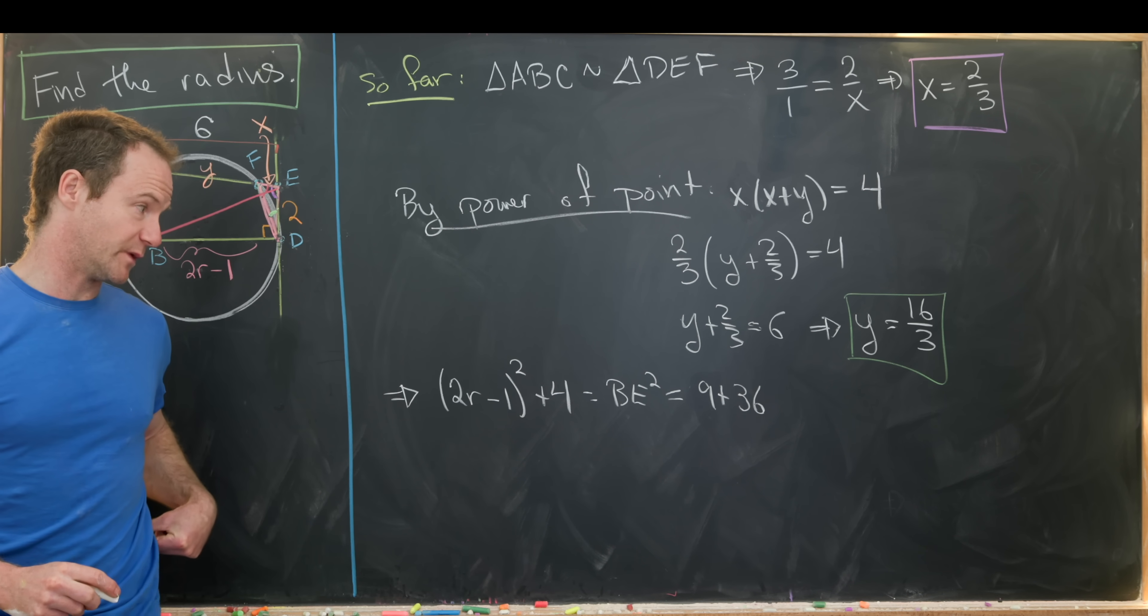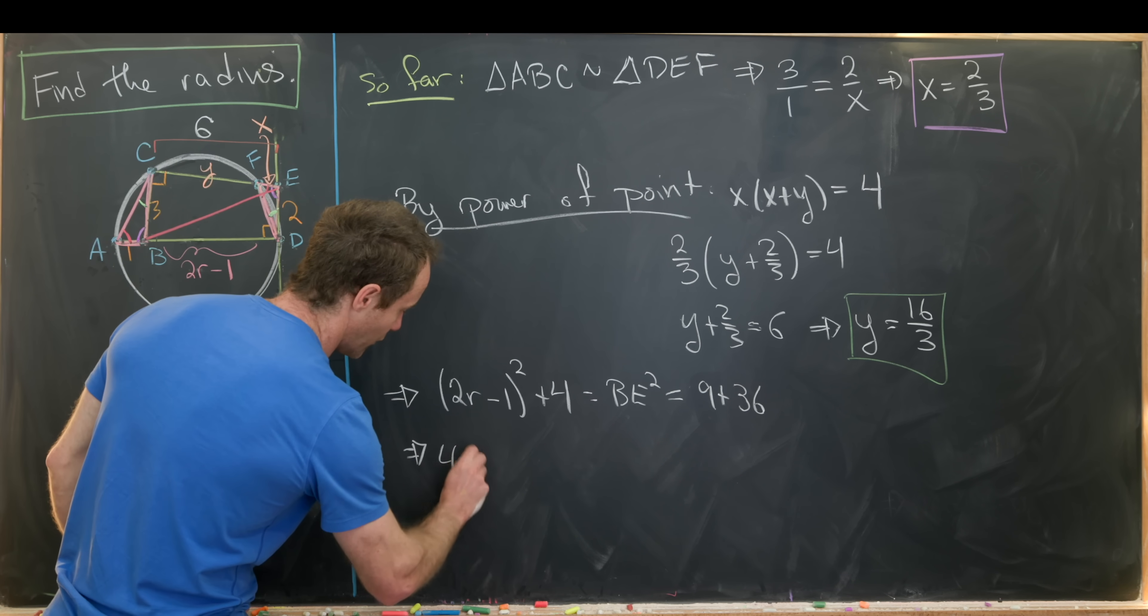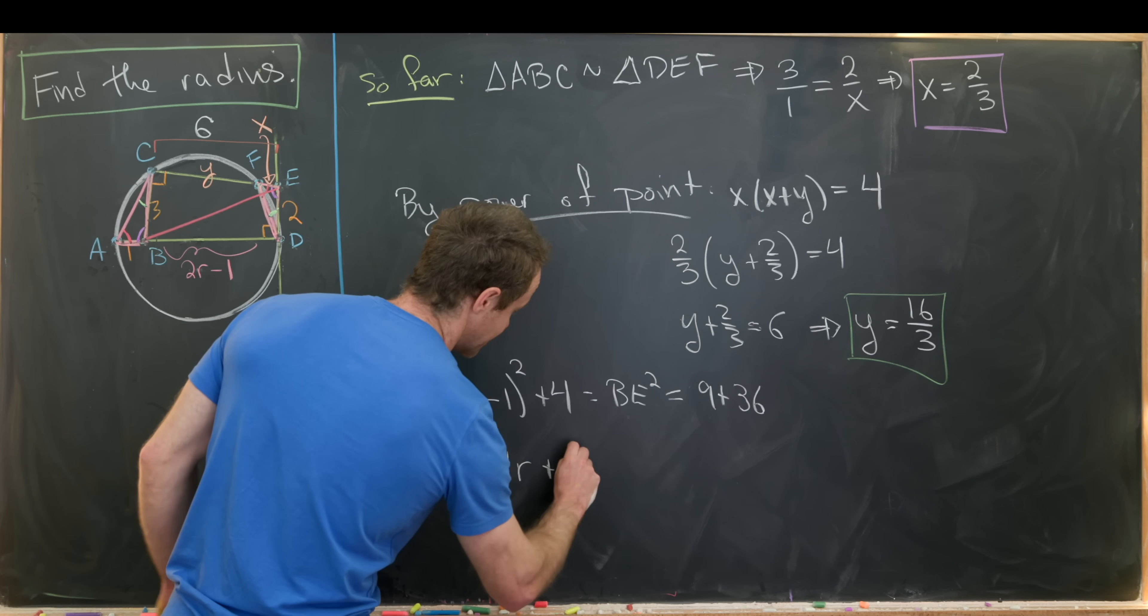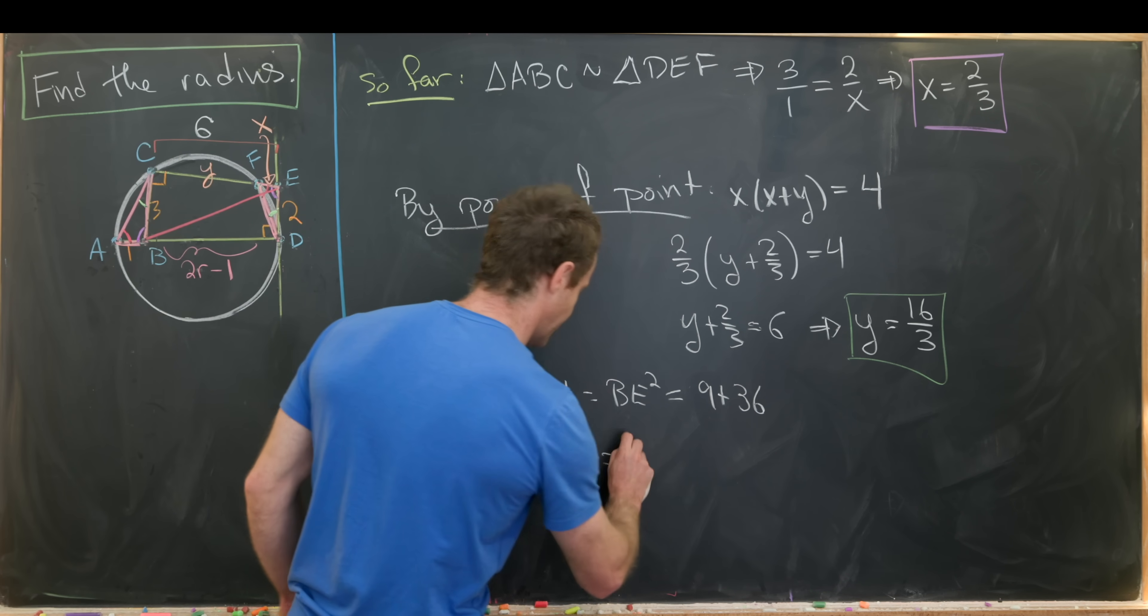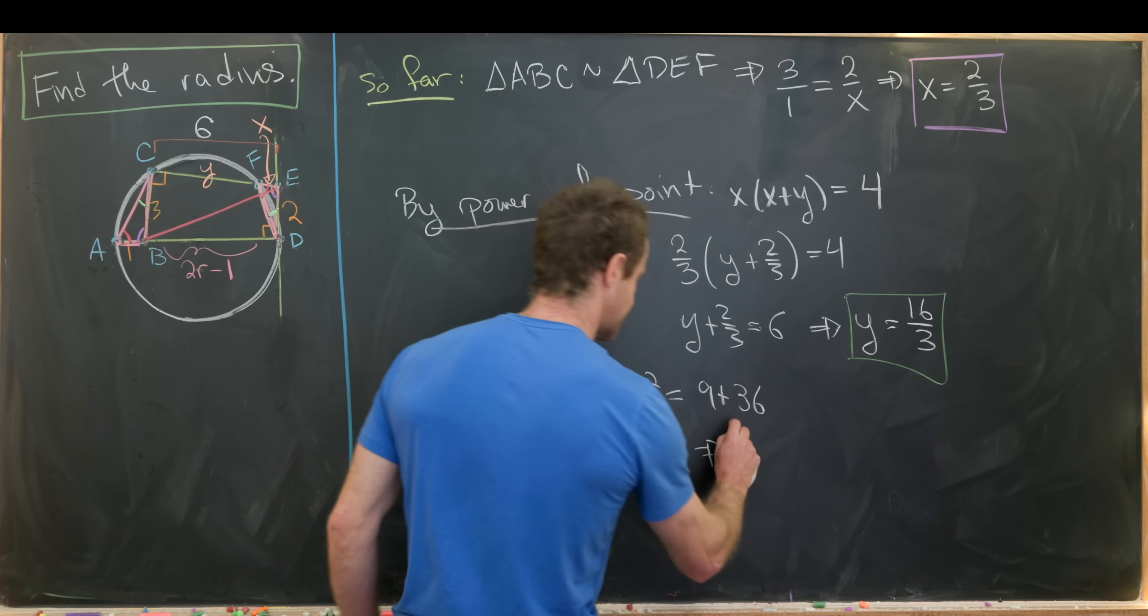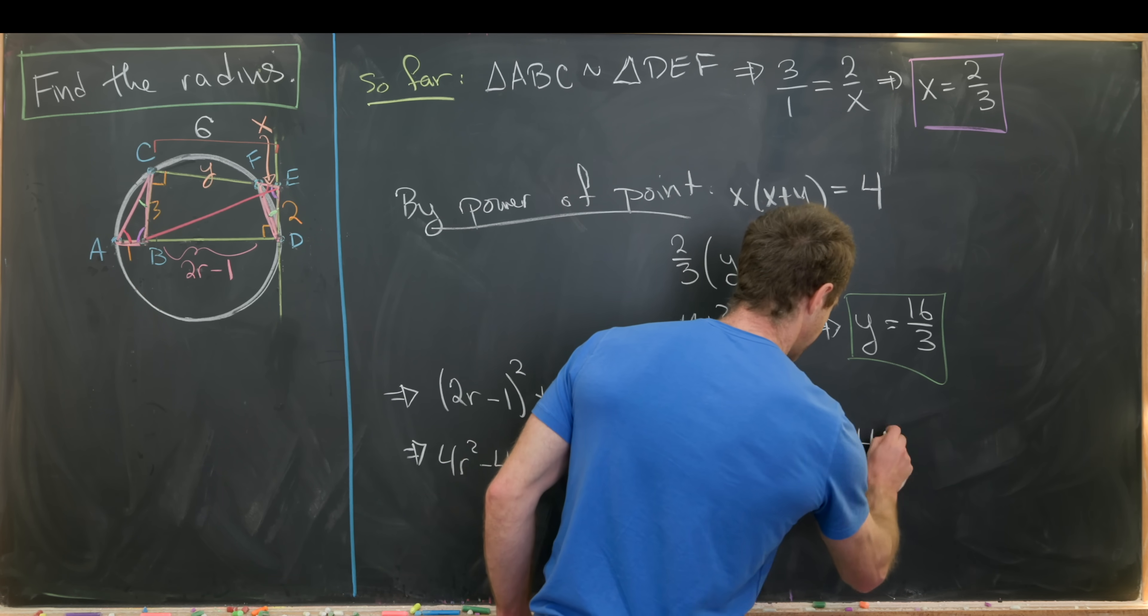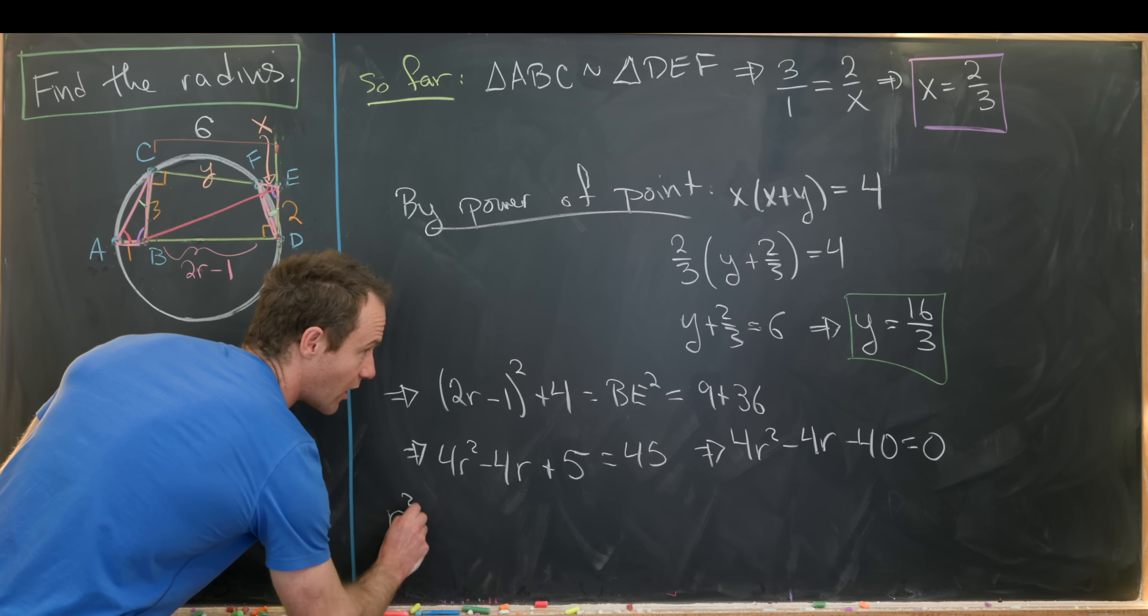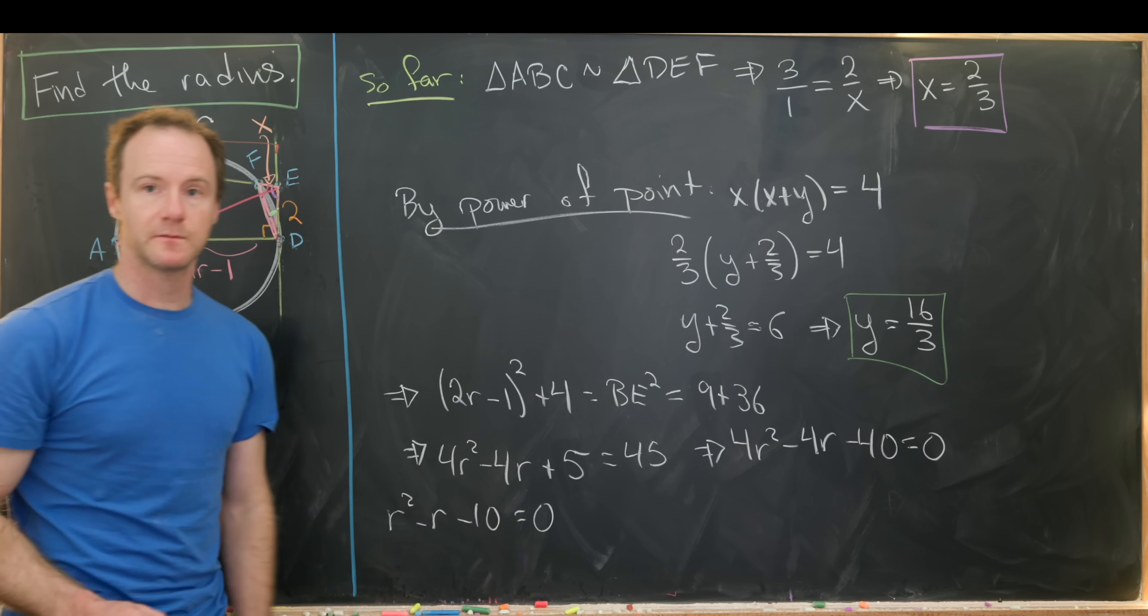But now we've got a nice quadratic formula that we can solve for R. So here this will give us 4R squared minus 4R plus 1 plus 4 is 5 equals 9 plus 36, which is exactly 45. Now we can move this 45 over, and that'll give us 4R squared minus 4R minus 40 equals 0. We can factor a 4 out of that, leaving us with R squared minus R minus 10 equals 0.